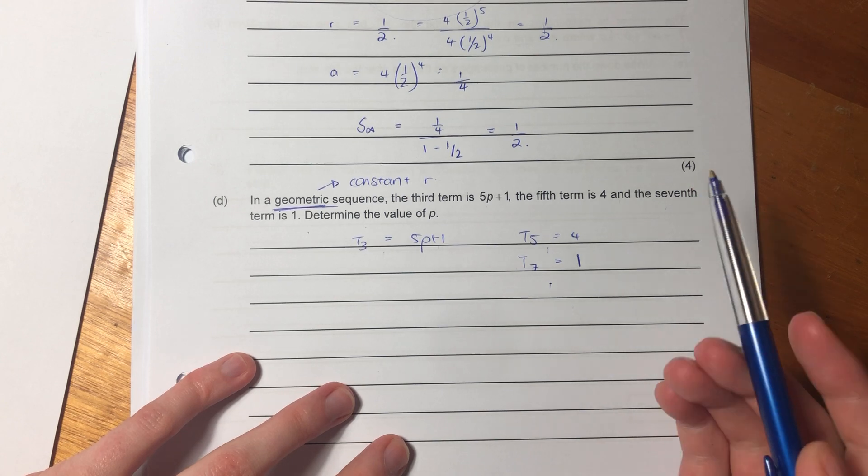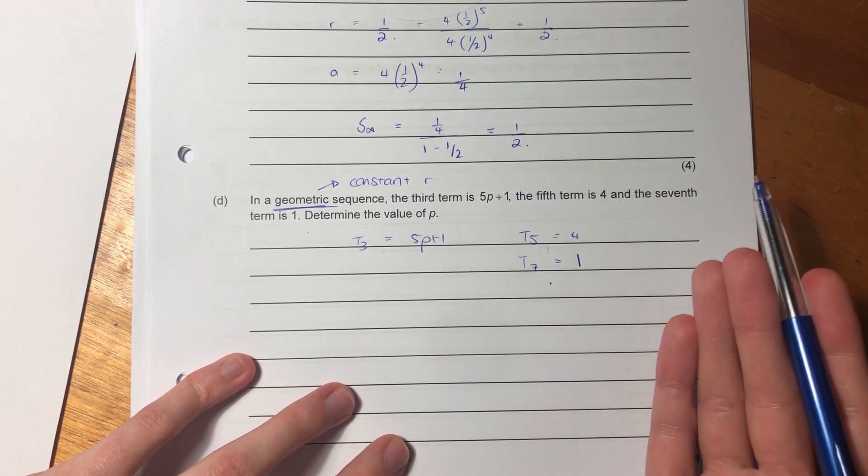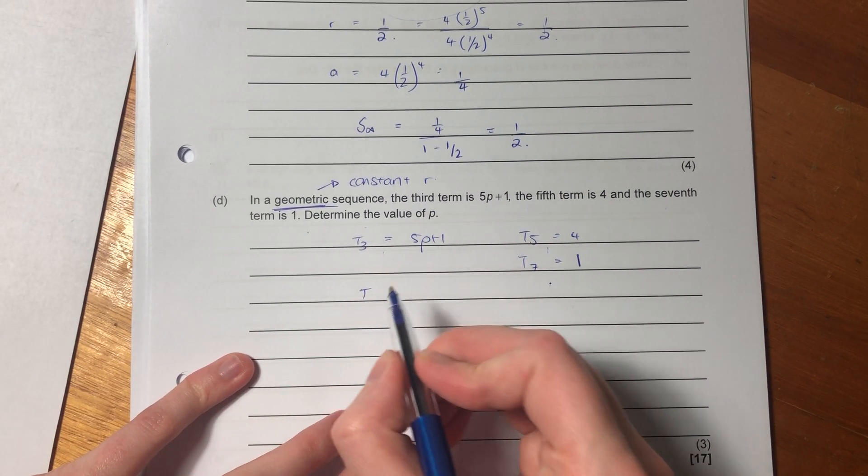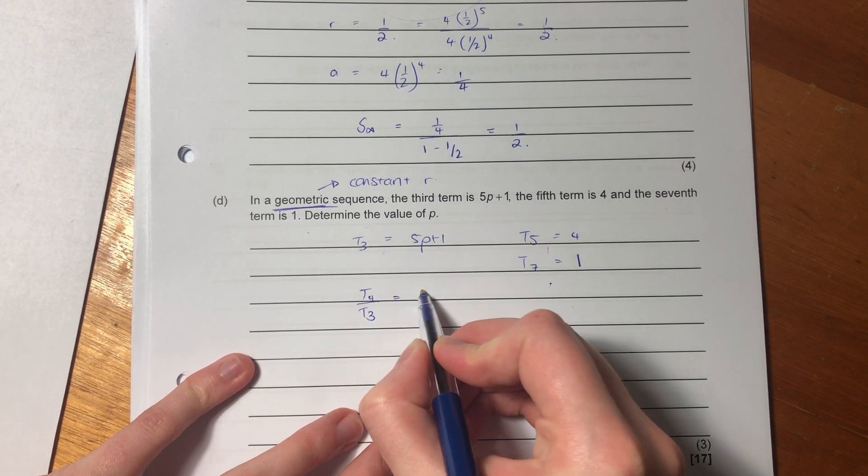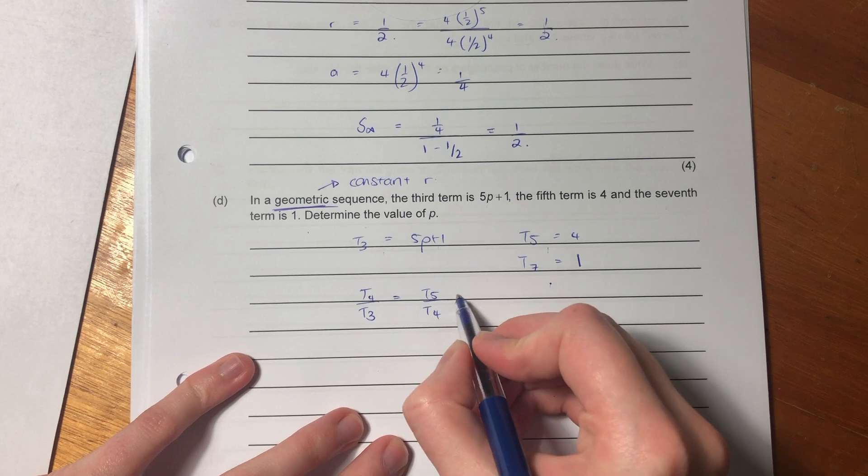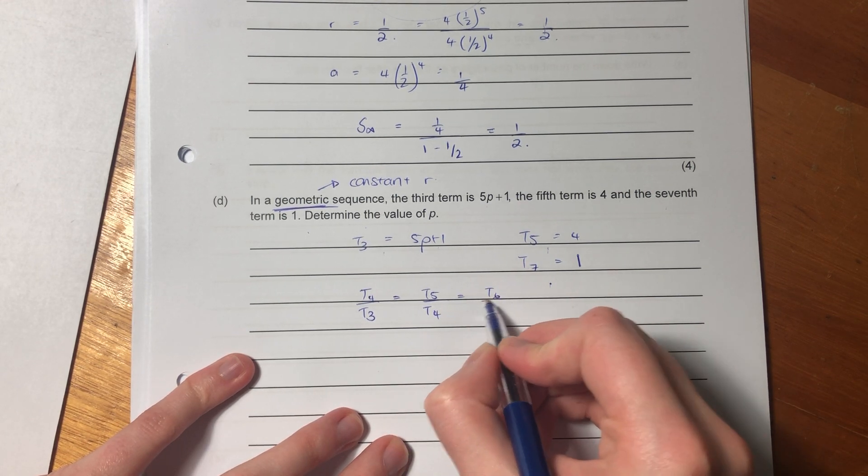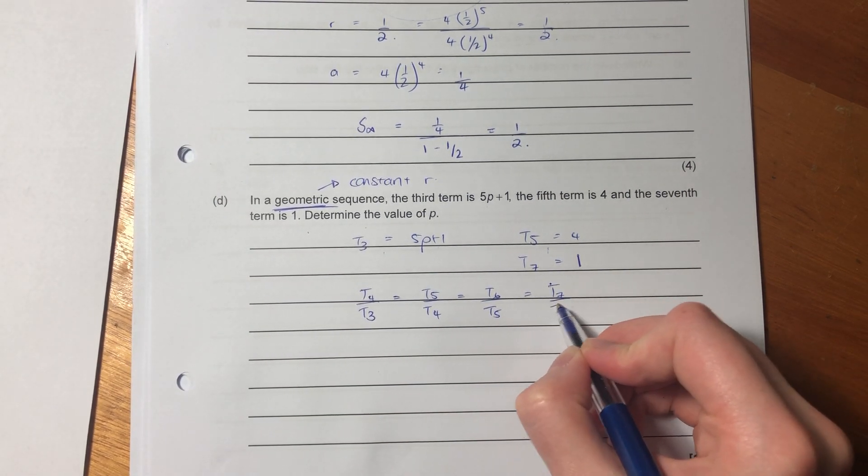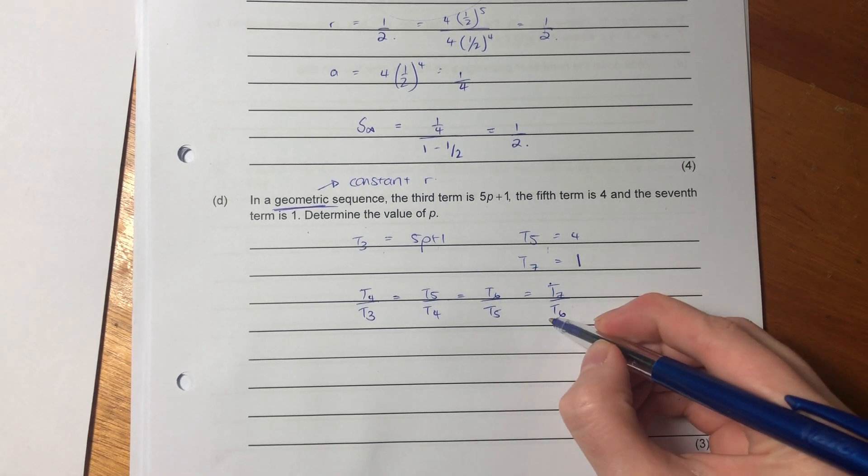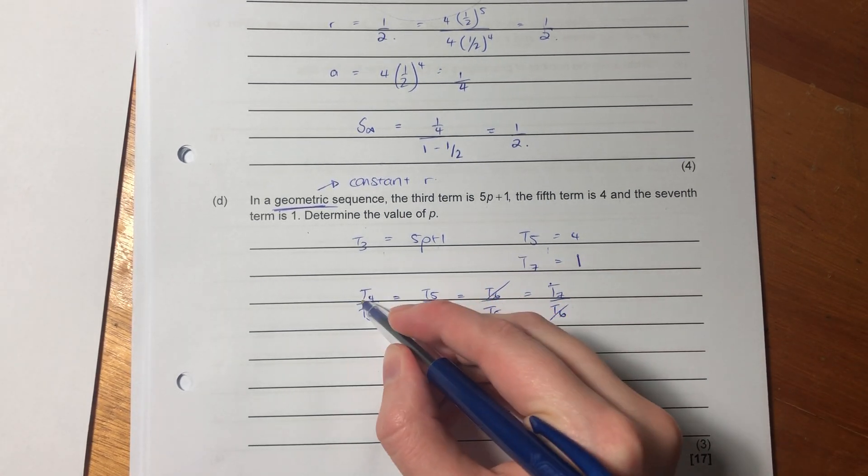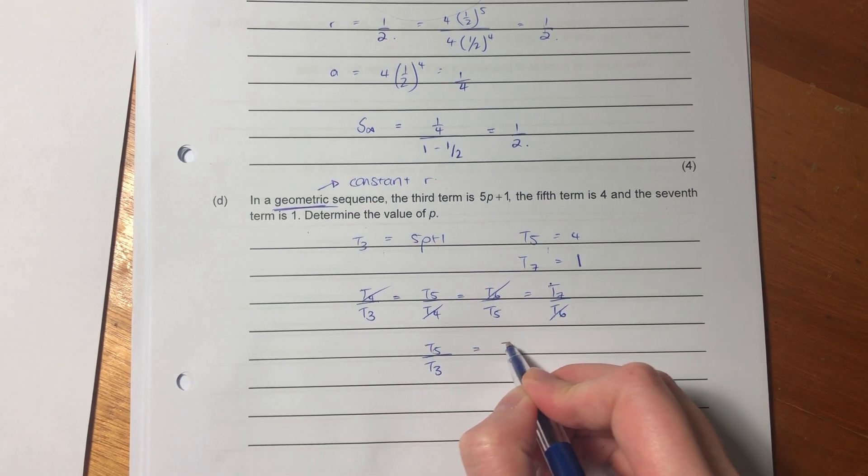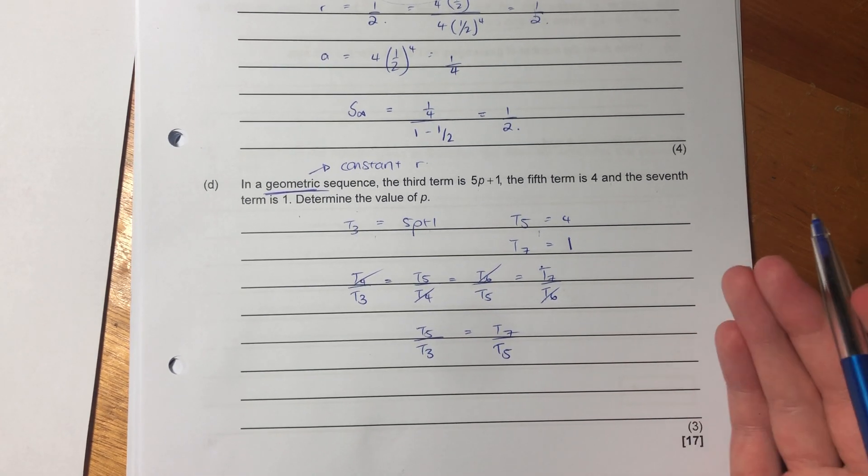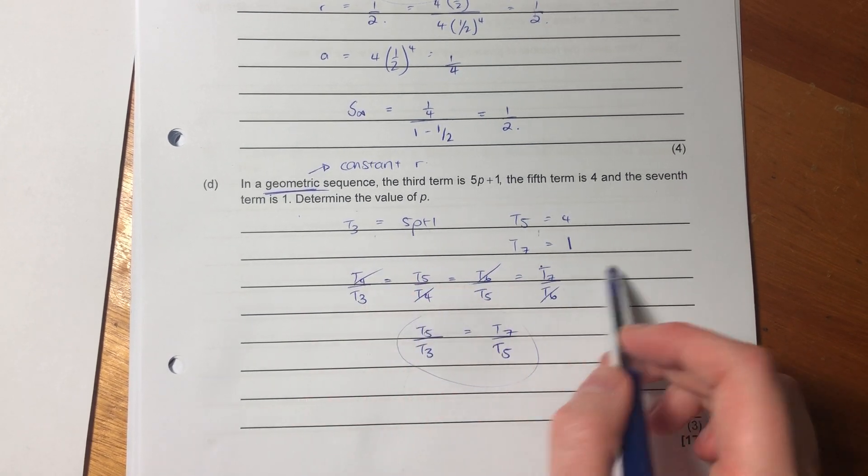So this is quite an interesting one. Because you could be thinking, good grief, like how on earth would I do this? But we know that we have a constant ratio. So we know that T4 over T3 equals the same as T5 over T4, which equals the same as T6 over T5, which equals the same as T7 over T6. But what we could do is we could just cancel those, and we could cancel those. And then effectively, we get T5 over T3 equals T7 over T5.